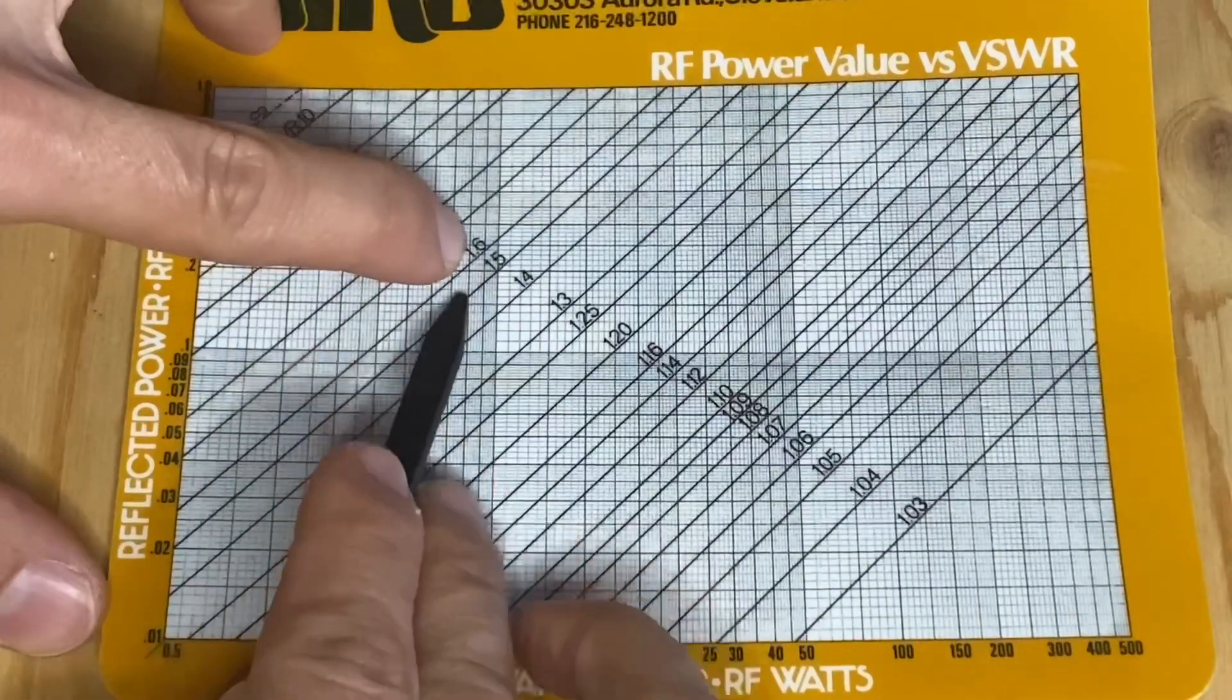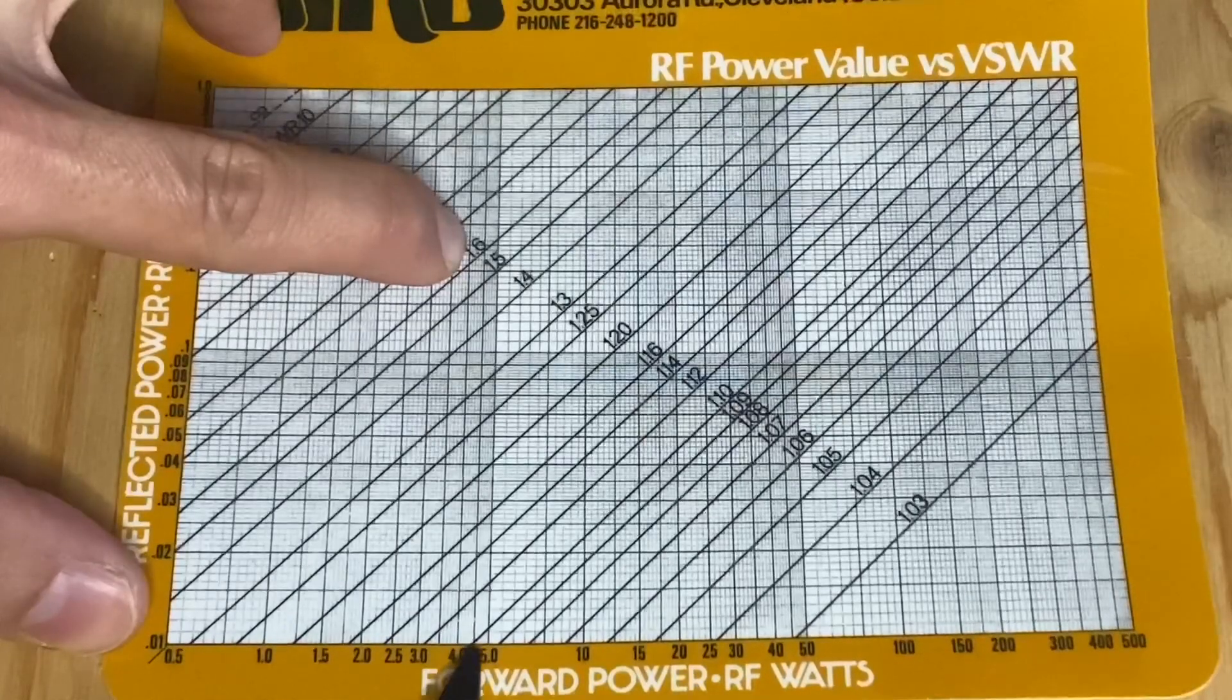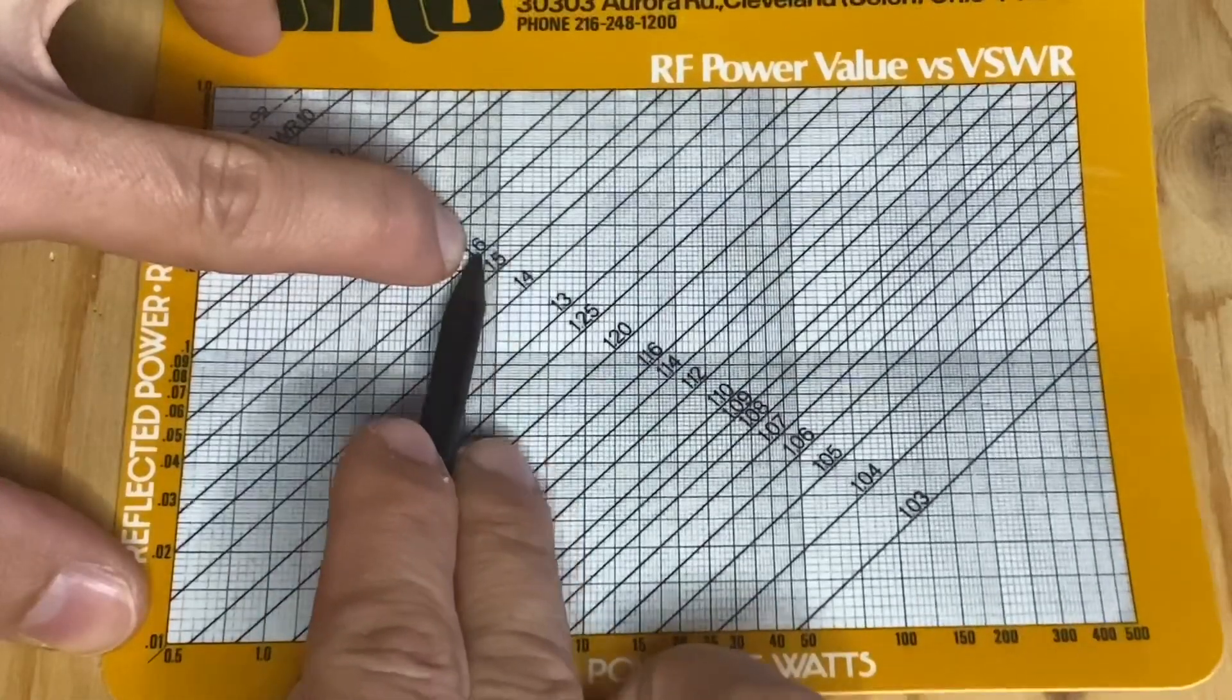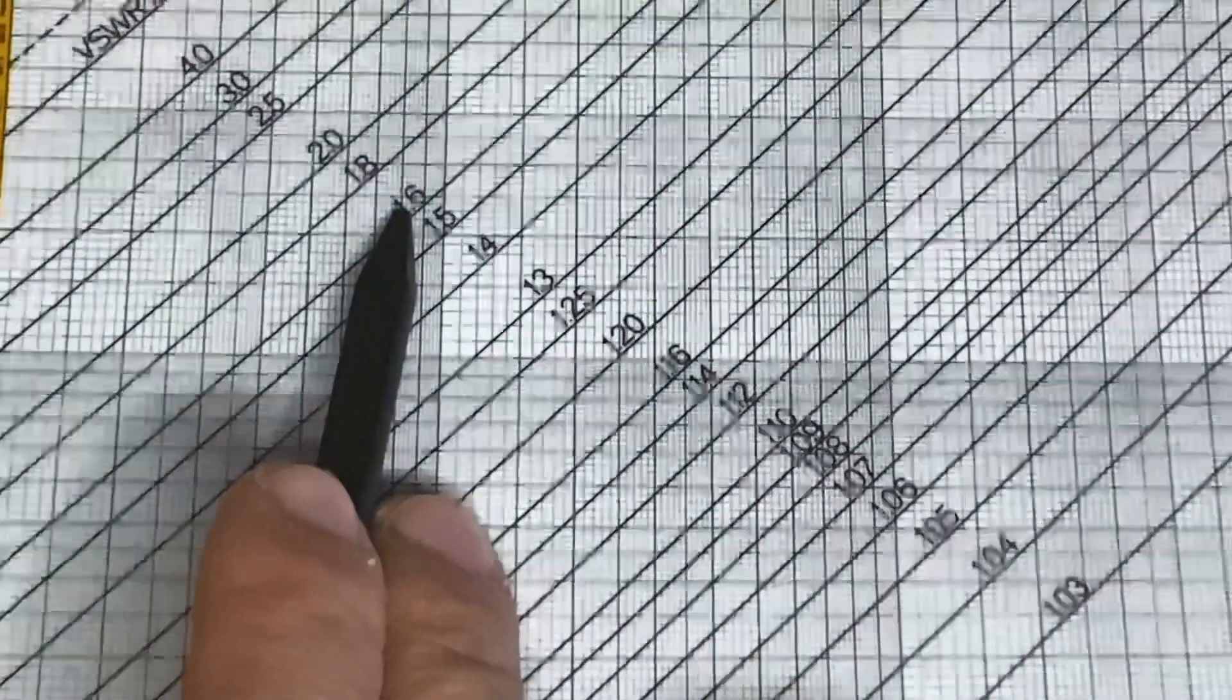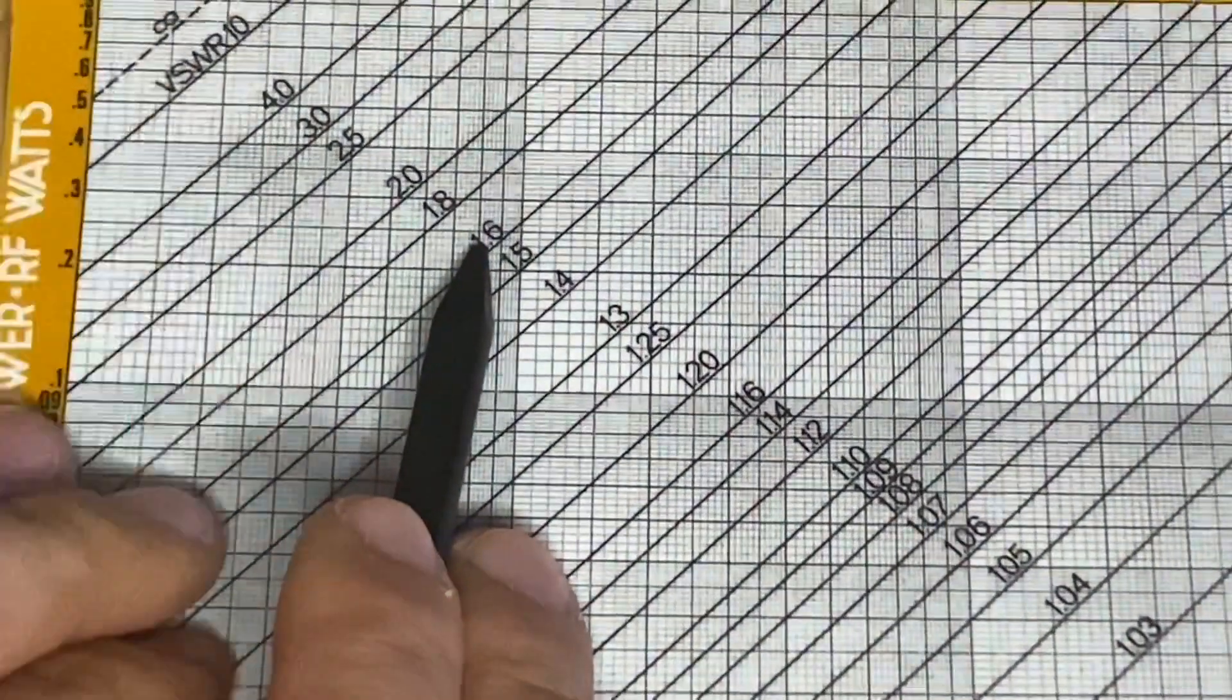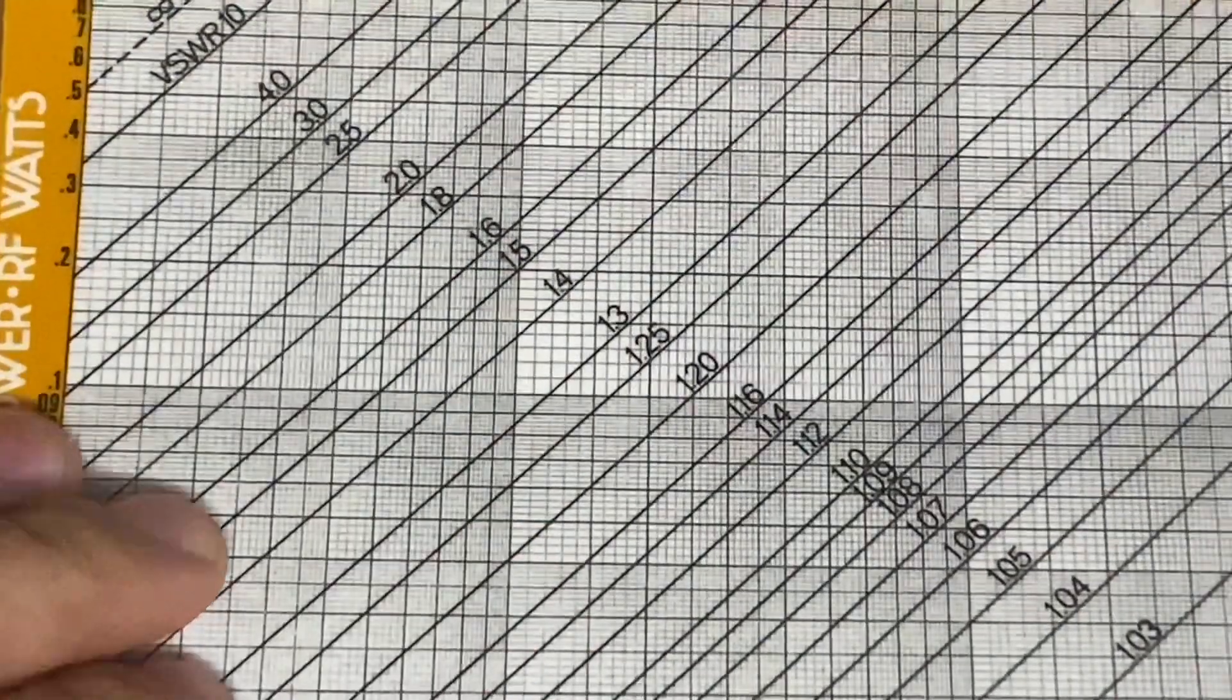they cross in here, just two lines before this one, so 1 and 2, cross in here. And as you can see, the VSWR is 1.7.